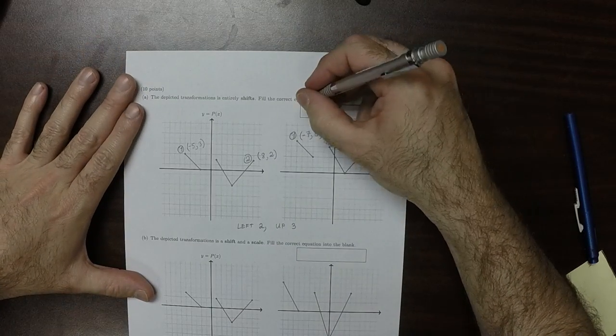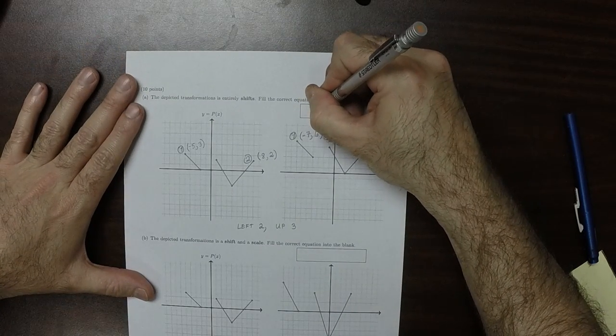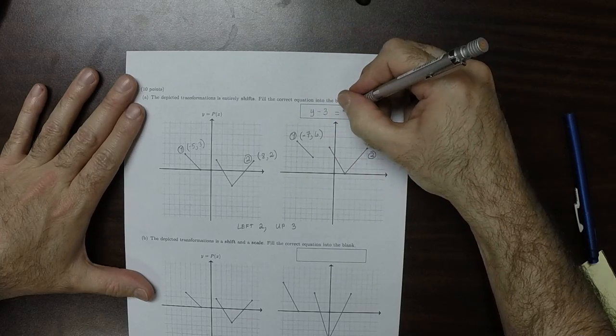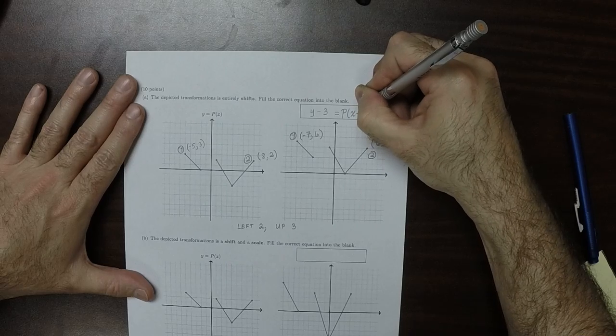Left 2 and up 3. So it must be y minus 3 is p of x plus 2.